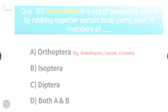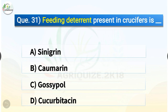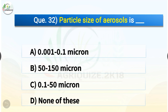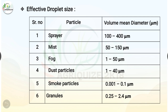Question number thirty-one: feeding deterrent present in crucifers is — options are sinigrin, coumarin, gossypol, or cucurbitacin. The correct answer is option A, sinigrin. Question number thirty-two: particle size of aerosols is — options are 0.001 to 0.1 micron, 50 to 150 micron, 0.1 to 50 micron, or none of these. The correct answer is option C, 0.1 to 50 micron.